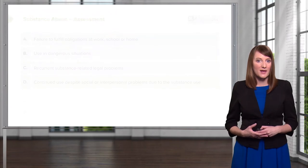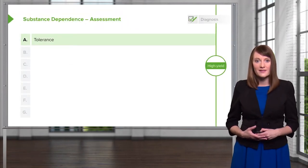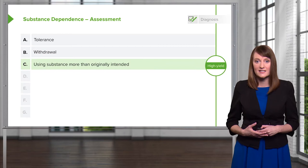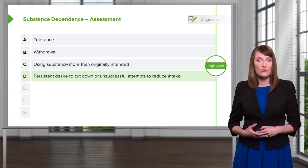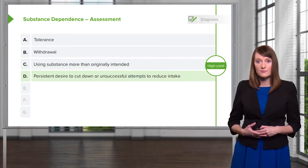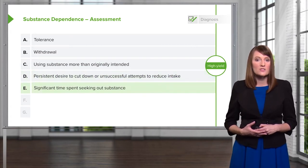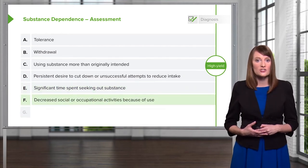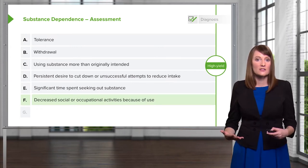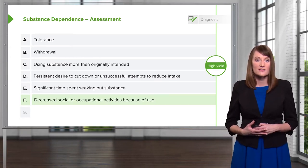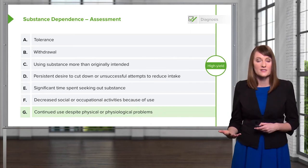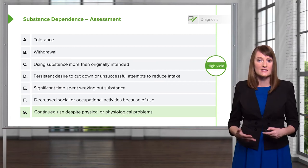This is different from substance dependence, which is defined as follows: having tolerance, withdrawal, using the substance more than originally intended, persistent desire to cut down or unsuccessful attempts to reduce intake, spending a significant amount of time seeking out the substance, decreased social or occupational activities because of time spent using substances, and continued use despite physiological problems such as medical illnesses or physical problems like incurring falls or accidents related to substance use.